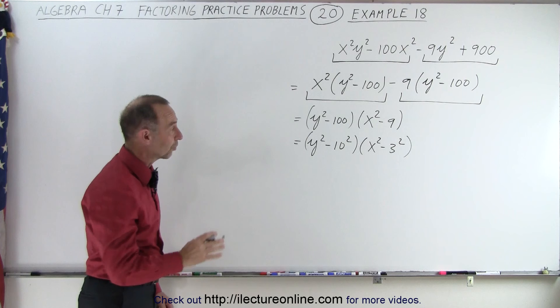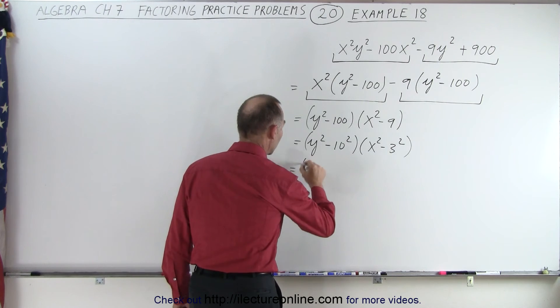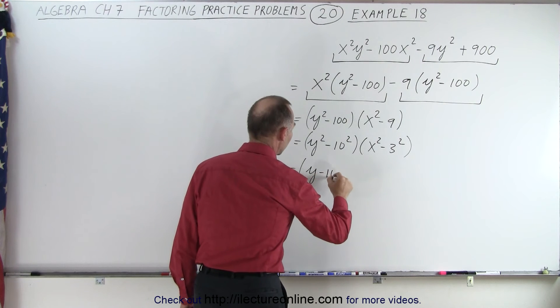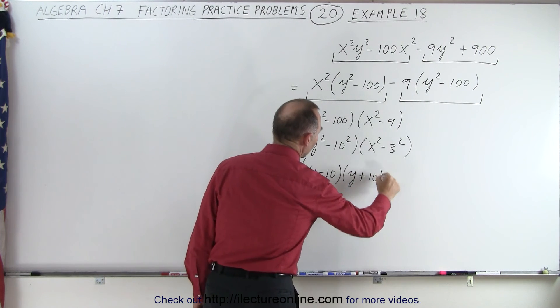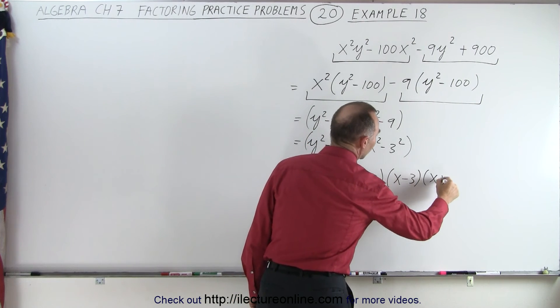And of course, then it becomes clear that those are indeed the difference of squares, which can be factored as follows. This can then be written as y minus 10 times y plus 10. And this is x minus 3 times x plus 3.